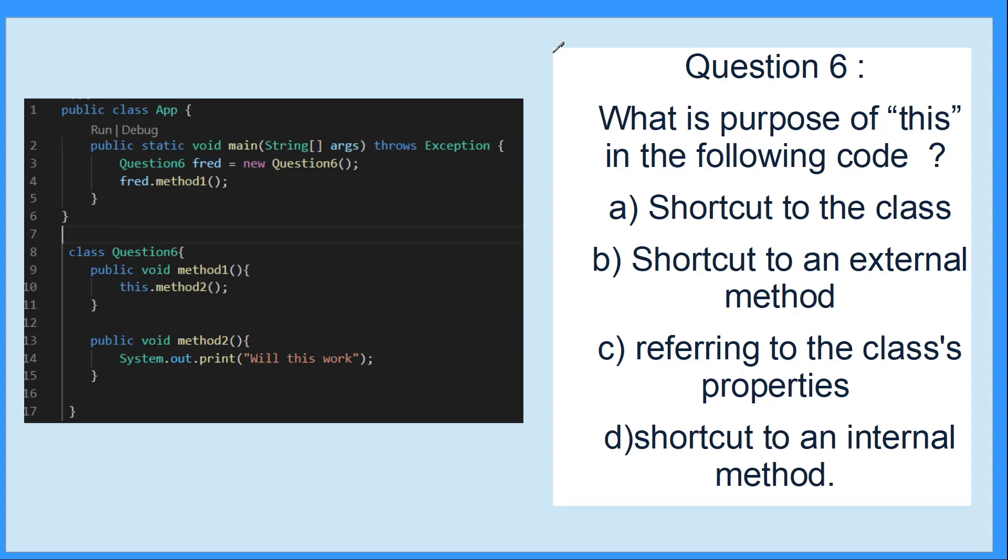This is a theory based one. It's asking what is the purpose of the this keyword in the following code. The answer is shortcut to an internal method. Usually you can use it to refer to a class property or the current class property, but in this one we don't have any attributes or properties. However, when you call method one, it is creating a shortcut to method two. So the most correct answer is d - it allows us to create a shortcut to an internal method.